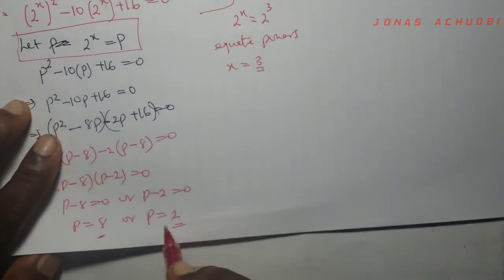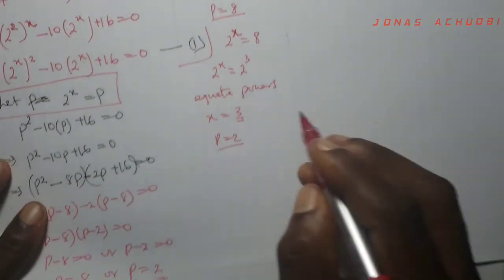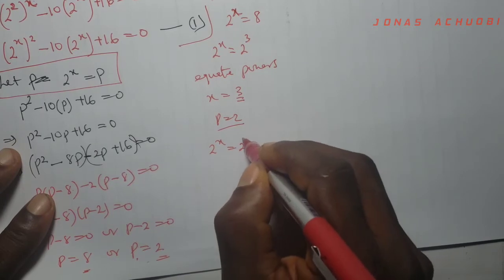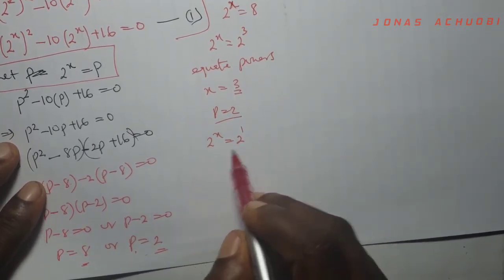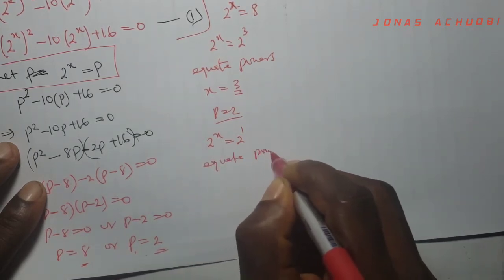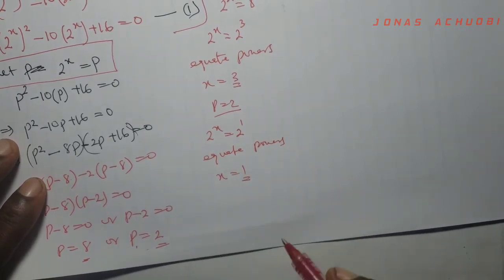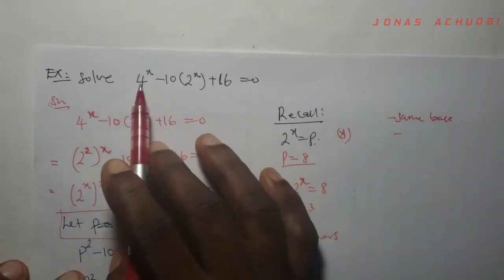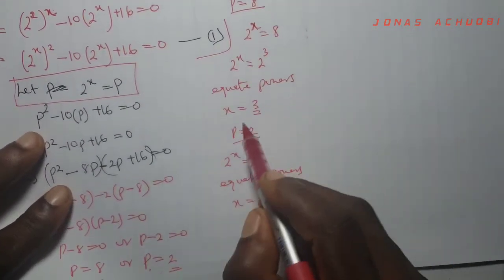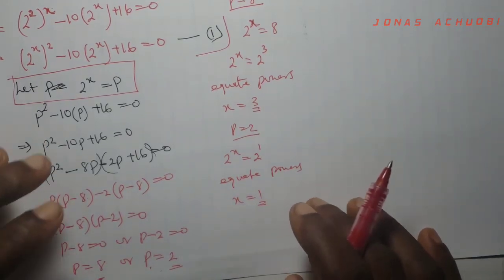For the second solution, when p is equal to 2, we go back to our substitution and write 2 to the power x equal to 2. Since 2 simply means 2 to the power 1, the bases are already the same. We equate powers and get x equal to 1. So the solutions to our exponential equation 4 to the power x minus 10 into 2 to the power x plus 16 equal to 0 are x equal to 3 and x equal to 1.